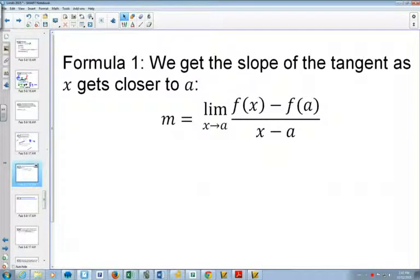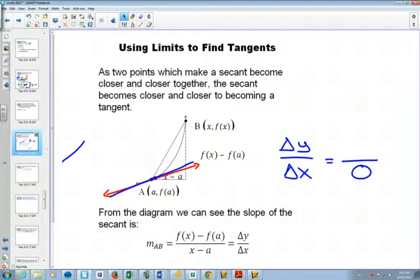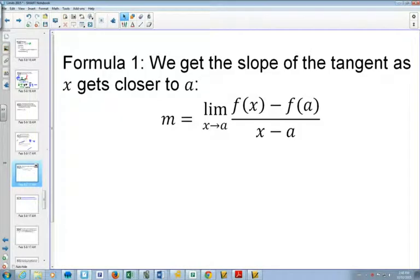Here's our first formula. So the slope is rise over run. If we look back at our diagram, this is one value for y. This is your other value for y at point a. And f(x) minus f(a) would just be the difference in your y values. And that's your rise. So that's why we have f(x) minus f(a) on the top of our equation.